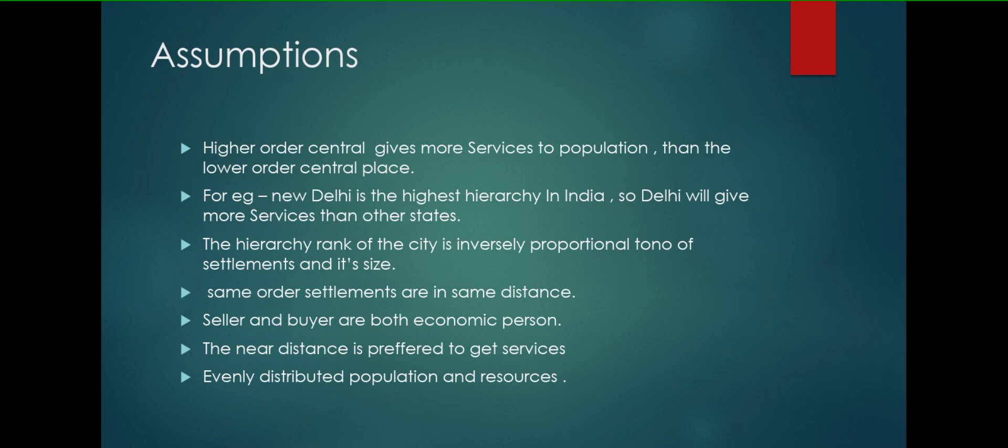The assumptions taken by Christaller were such as: higher order central place gives more services to population than a lower order central place. For example, New Delhi is the highest hierarchy in India, so Delhi will give more services than any other state.